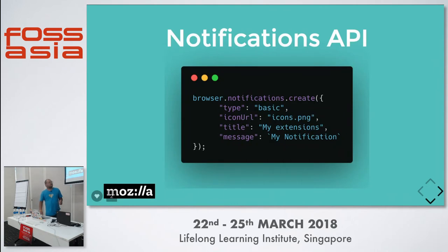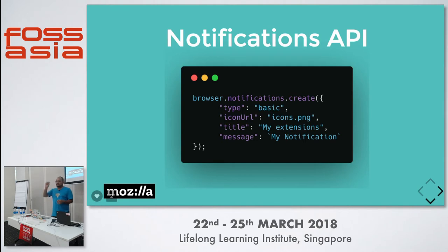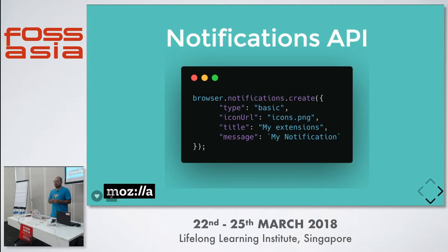Next is the Notification API — a really good API. All it does is generate a browser notification. Whenever you install Gmail or any website nowadays that asks 'Do you want to receive notifications?' — you click yes and you're spammed by notifications. Thanks to this API.